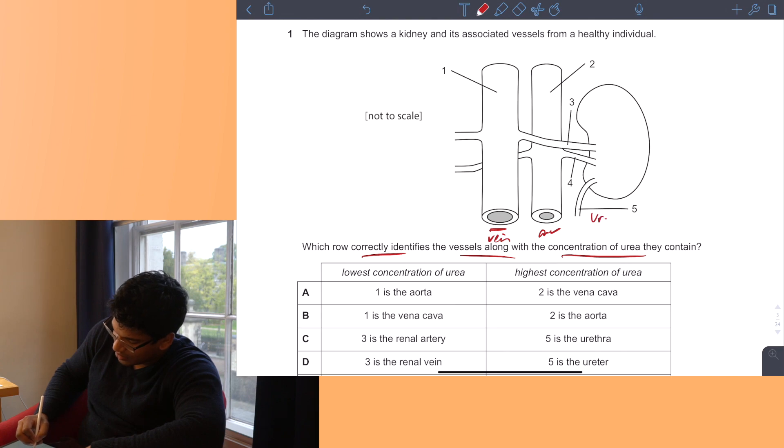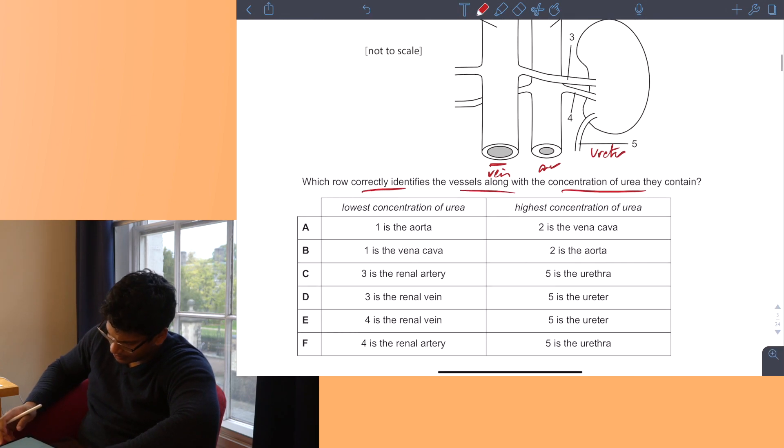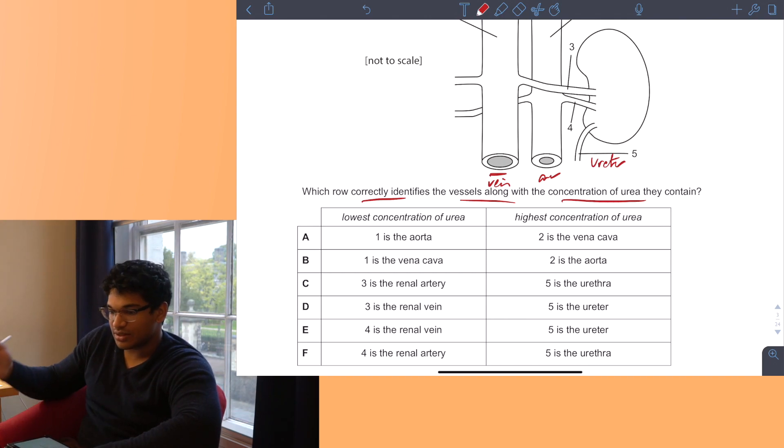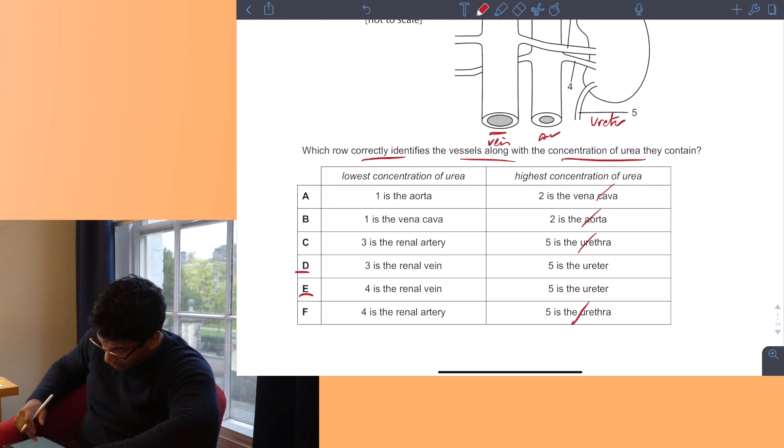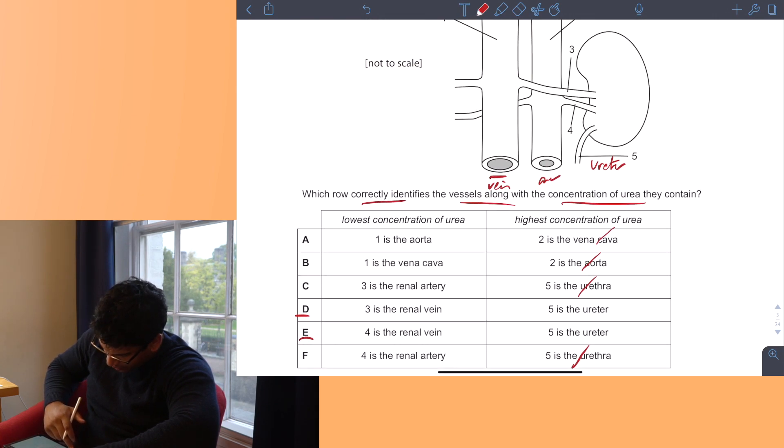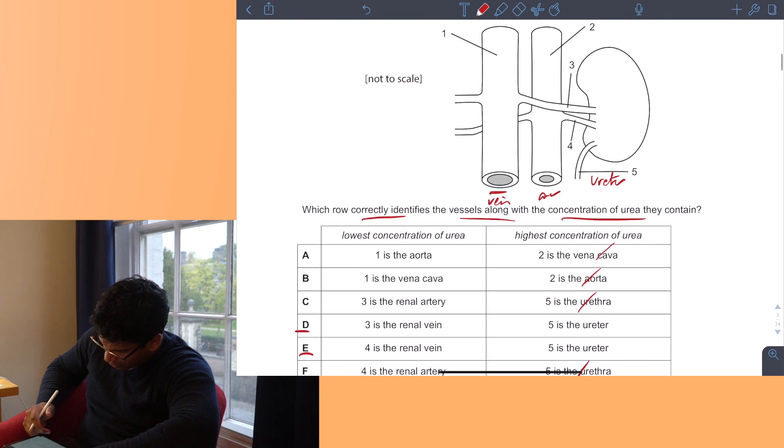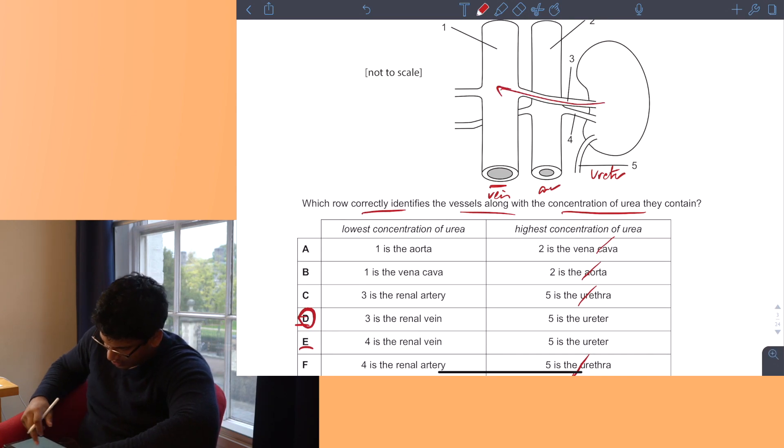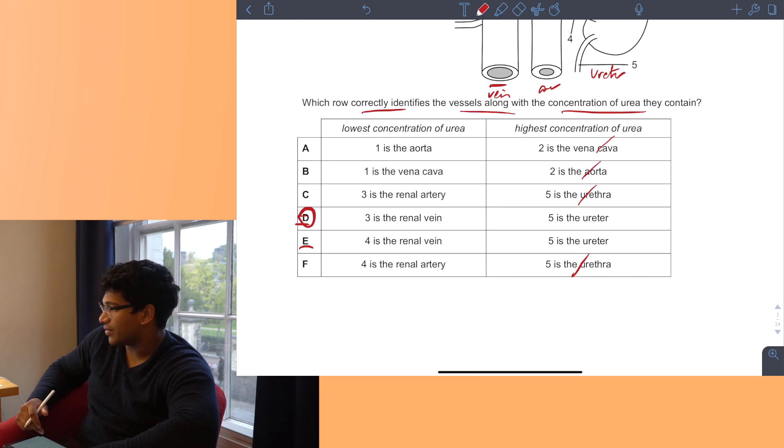It's the highest concentration of urea of all the vessels. Arterial blood goes into the kidney, and the kidney filters out urea into the urine, so it must be in the ureter. So it's between D and E. The renal vein goes into the inferior vena cava, which is the vein with the thinner wall. So 3 must be the renal vein. The answer is D.